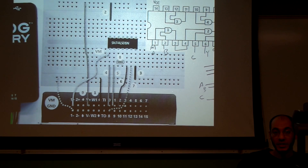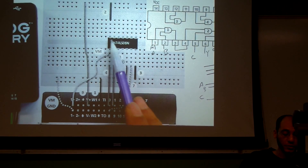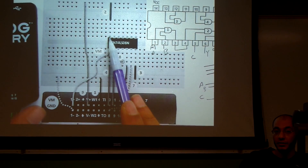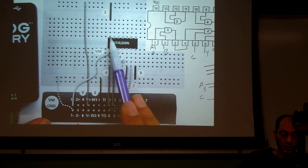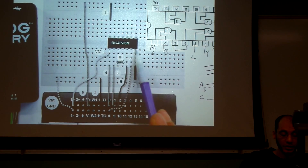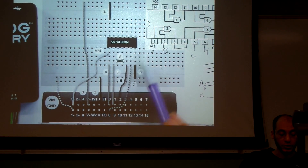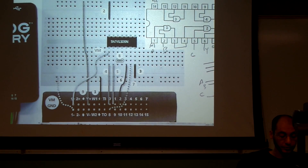Next, verify that the ground is connected to zero volts. Take the 1+ wire and connect it to pin number seven, then make sure pin seven is reading zero volts in the Logger. This confirms that VCC is at positive 5 volts and ground is at zero volts.